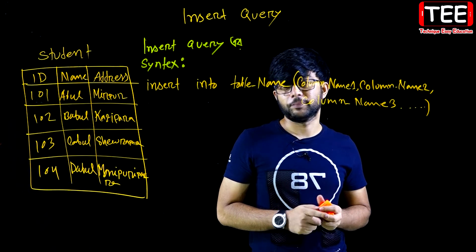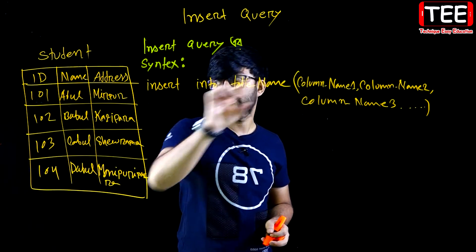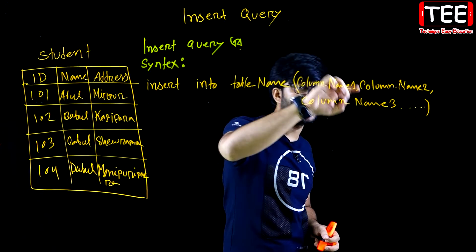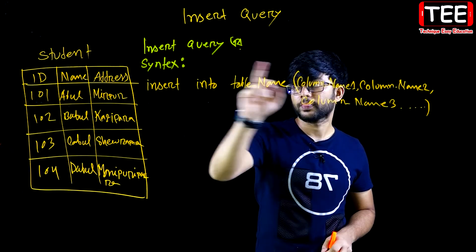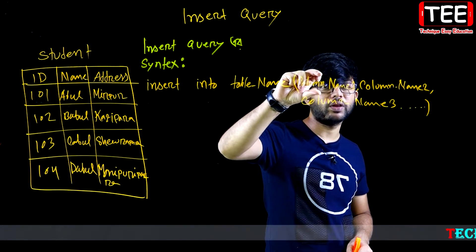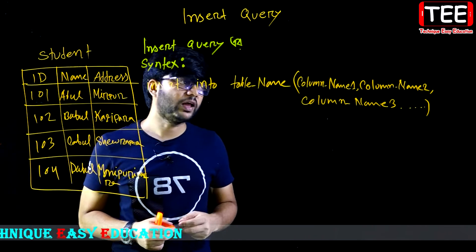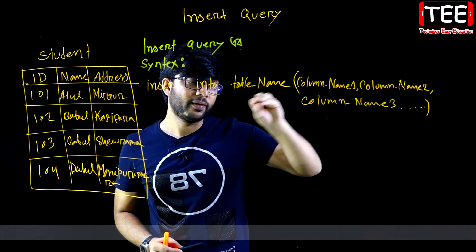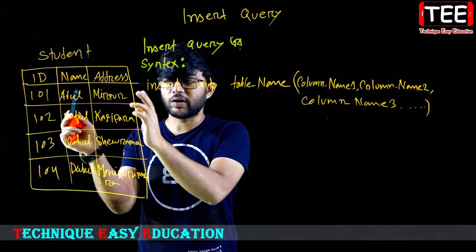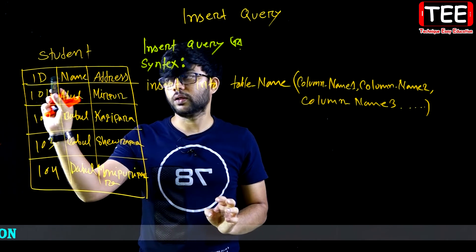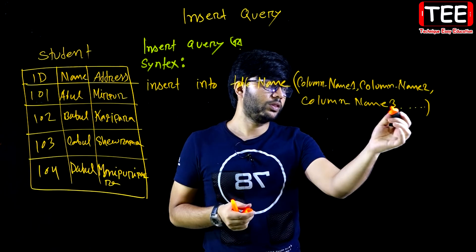To insert a record, you put the data in order. The data you write must match the column order. The number of values you provide should correspond to the columns you have written. To show the values for this, we use the VALUES keyword. The syntax is: INSERT INTO table name, then specify the columns in order, and then the VALUES. When I see the syntax, I can show you the structure of the table using dot notation to check the structure.